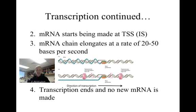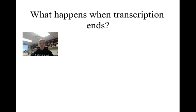Transcription ends and mRNA synthesis stops when one of two things occurs: either the sequence of RNA coded for at the termination sequence causes the RNA to hydrogen bond with itself and detach from the DNA, or a protein bound to the terminator pushes the mRNA transcript off of the DNA. When transcription ends, there is a new segment of mRNA in the nucleus of the cell.